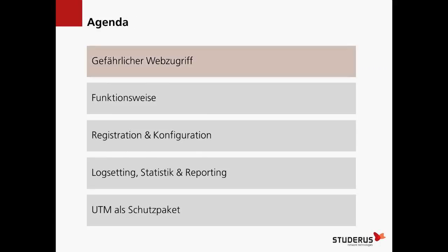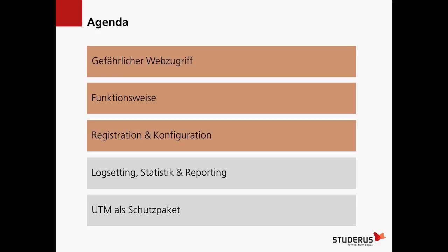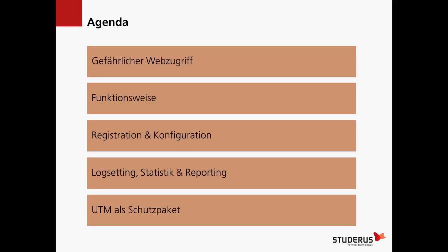Zur Agenda: Was ist überhaupt gefährlich am Webzugriff? Das machen wir ja alltäglich. Funktionsweise vom Content-Filter, Registration und Konfiguration – was wir auf der USG benötigen. Dann Log-Settings, Statistiken und Reporting, damit man sieht, ob es etwas bringt. Und Content-Filter ist ein Teil vom ganzen UTM-Schutzpaket – dazu noch ein paar Hinweise, wo der Content-Filter vor allem nützt.